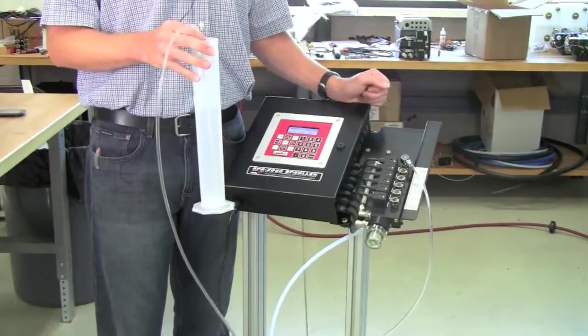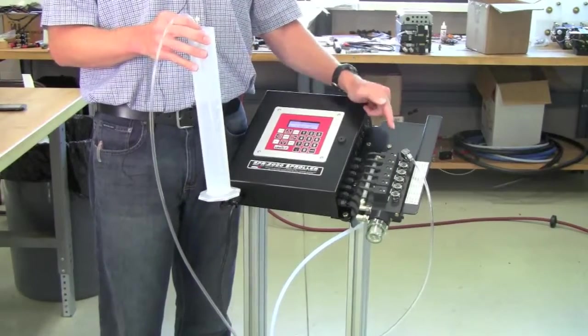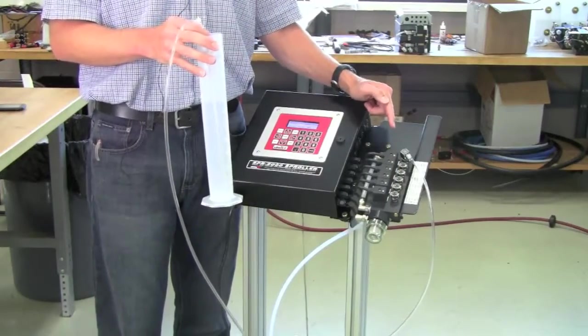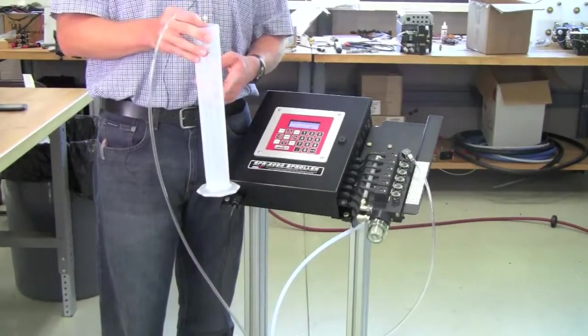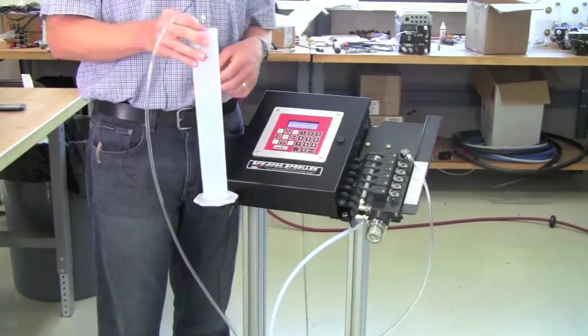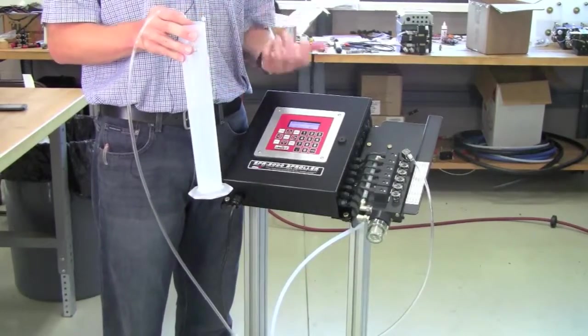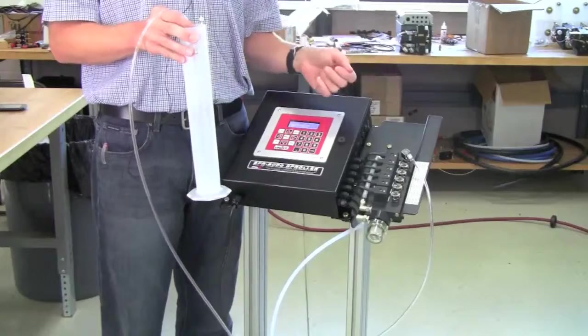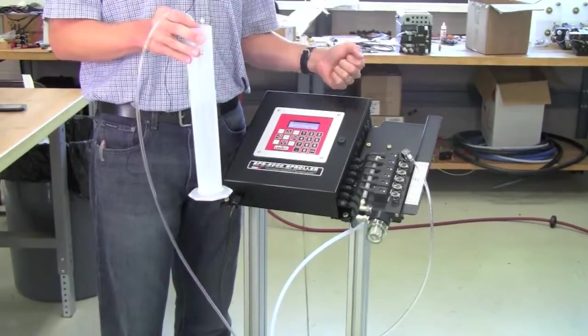In order to calculate how much flow we get out of each of the solenoid valves, we need to open one of the solenoid valves for a certain amount of time and collect all that fluid in the graduated cylinder. And then we'll divide the volume of fluid that we get by the amount of time that we keep that solenoid valve open. And that will give us our flow rate per second.